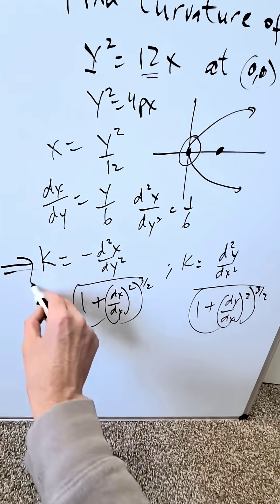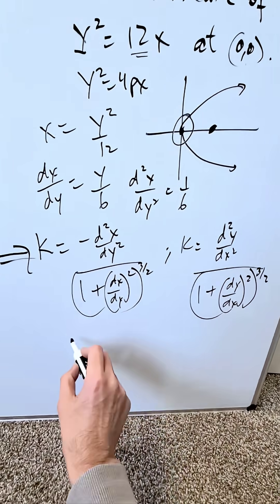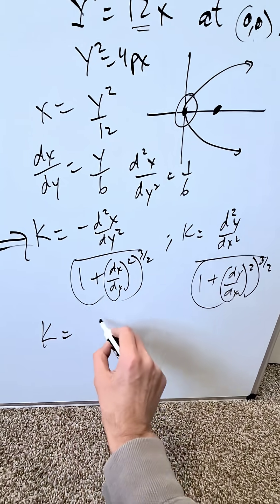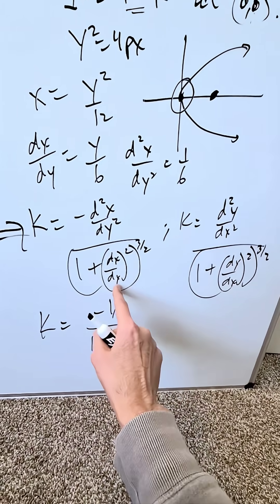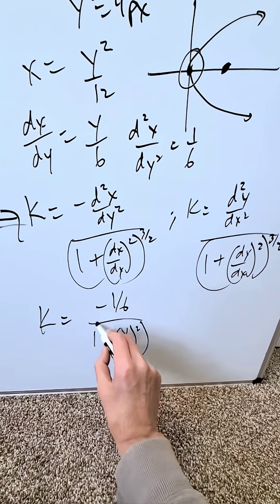This is our formula because we have representation dx/dy and I have the values. My second-order derivative in terms of the curvature is -1/6 divided by (1 + (y/6)²)^(3/2). I need the value of this y.